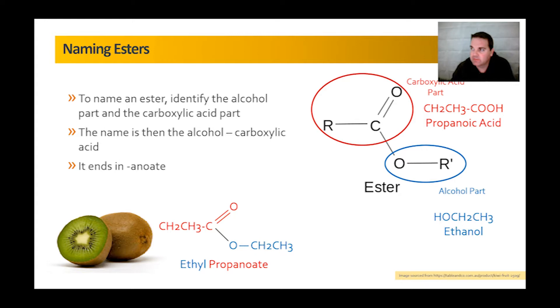But to show you some examples, these are some of the different flavours or smells we can get from esters. So raspberry, apple, pineapple, rum, peach, orange, wintergreen, honey, strawberry. So all of these smells come from esters and all of them you can see here the ester functional group that we've got. And probably quite possibly what they'll ask you in the exam is to identify the ester functional group. So as long as you can see the carbon double bonded to oxygen with another oxygen on it, that's the ester group, which comes from a carboxylic acid and an alcohol.